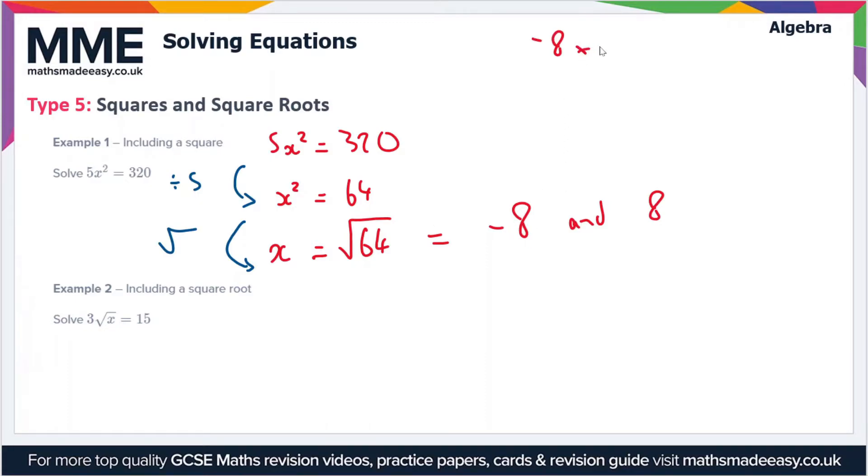Minus 8 times minus 8—if you put these in brackets, the two minus signs cancel, so you end up with a positive. You get positive 64. Therefore, the square root of 64 can either be minus 8 or plus 8.